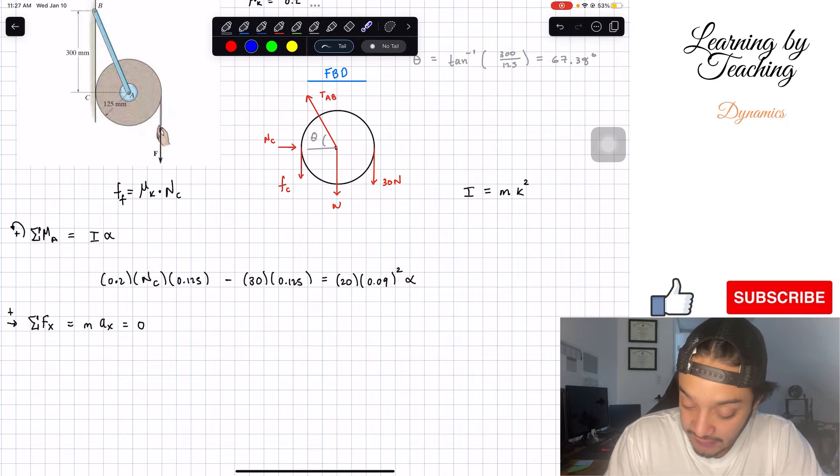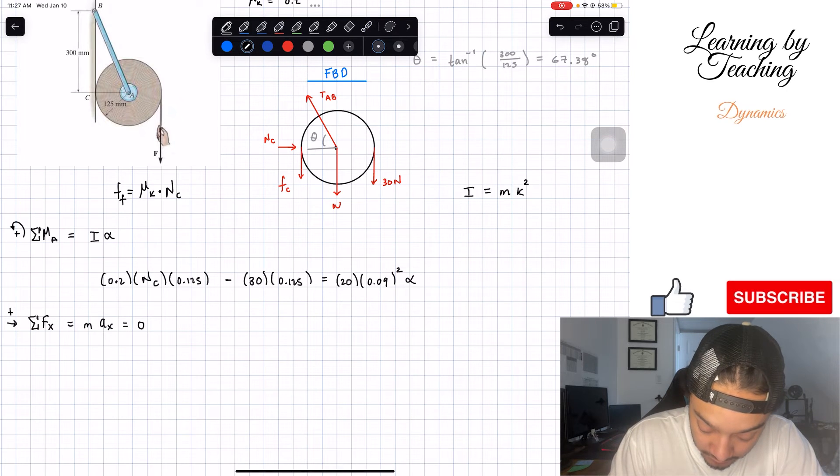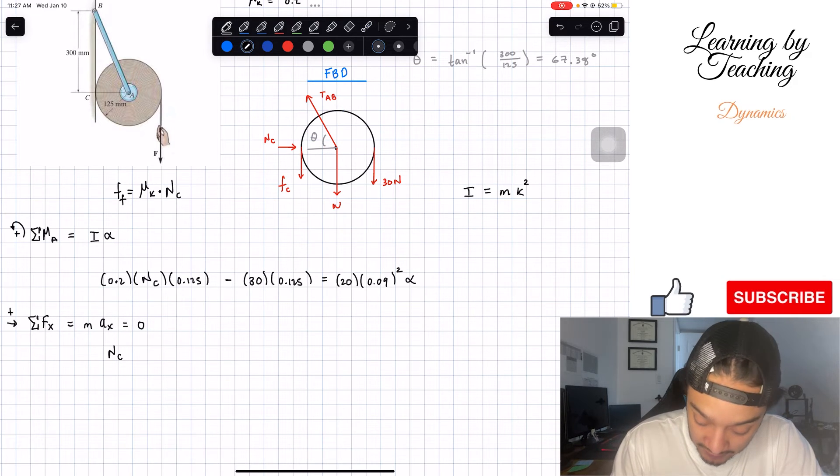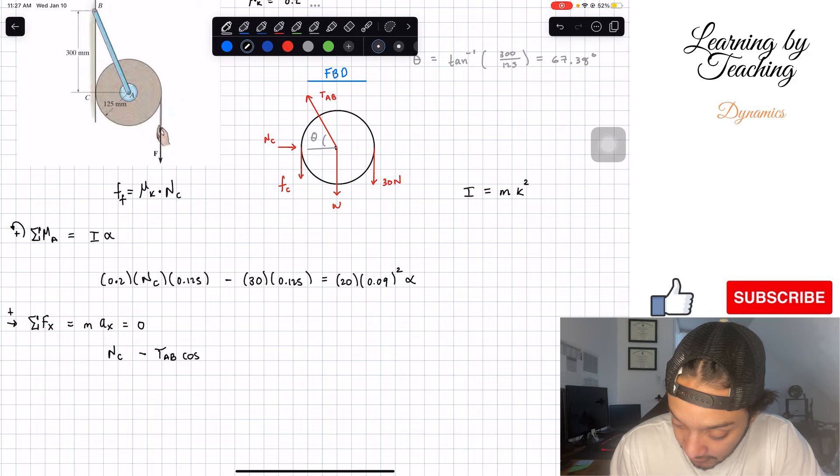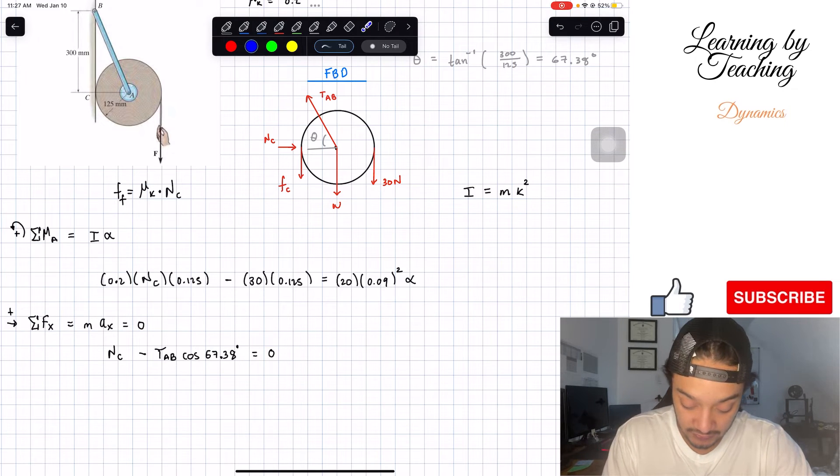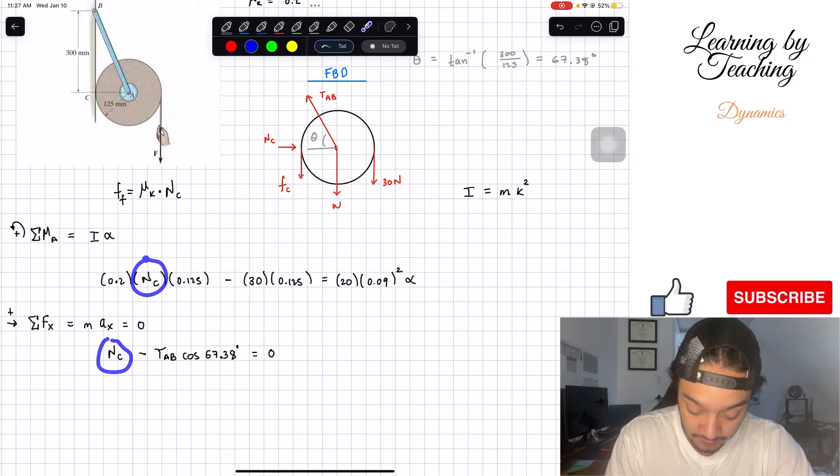What forces do we have in the horizontal component? We have our normal at C going to the right, which is positive, so we got N sub C. And we have the negative component in the x direction of our tension AB. So we got minus tension AB multiplied by the cosine of our angle theta, which is 67.38. And this should be equal to 0. Now we found the same variable N sub C. However, we have another one, so we have three unknowns and only two equations.